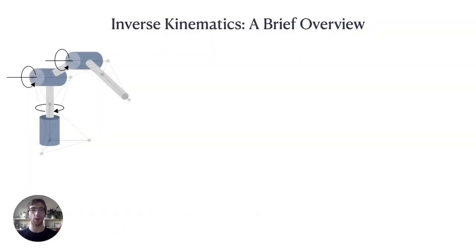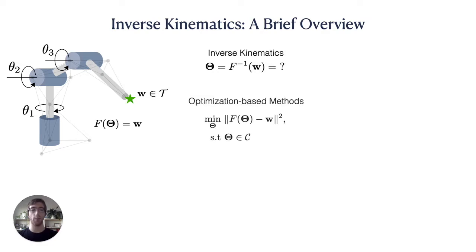Given a model F of a robot's forward kinematics and a goal position or pose W in its workspace, the problem of inverse kinematics asks us to determine a set of joint angles theta that position the end effector on the goal. When a closed-form solution is unavailable, optimization-based methods are commonly applied.